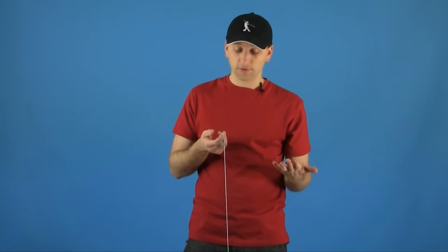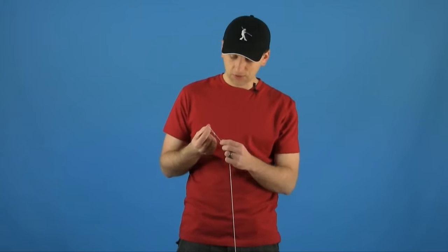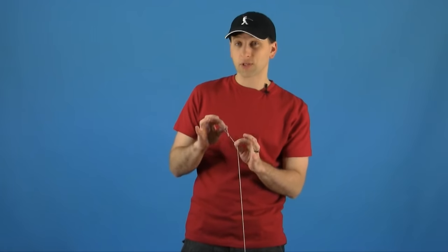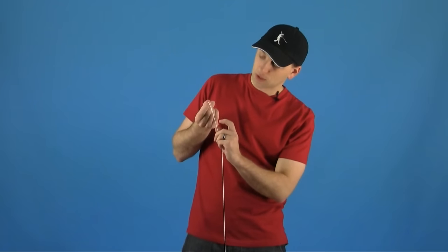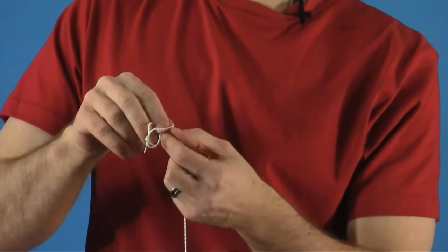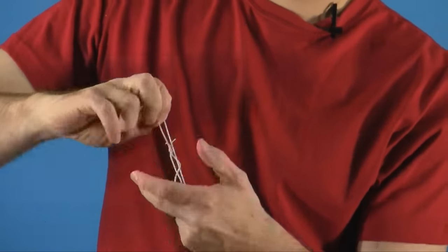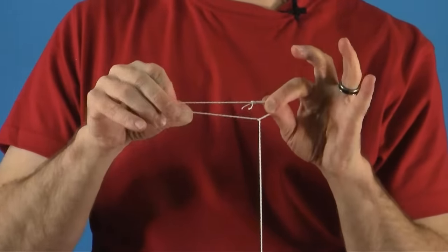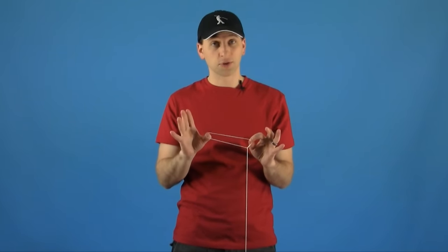This loop may or may not fit your finger perfectly, so here's a tip to make it always fit. Take the bottom string and feed it right through that loop. This creates an adjustable loop that can fit your finger no matter how large or small it is.